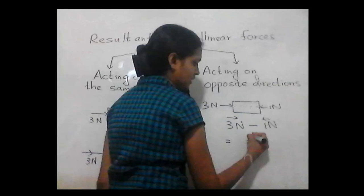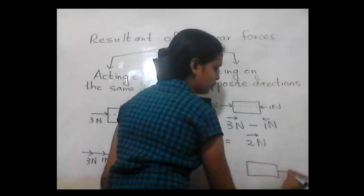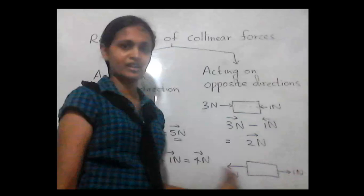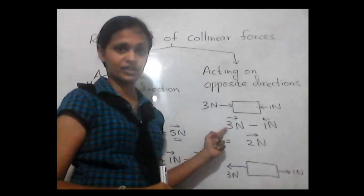There may also be an instance where a pull is applied in one direction and another pull in the opposite direction. In this case we get the same answer, but the direction will be the direction of the greater force — 2N towards that direction. To summarize: the resultant of collinear forces acting in the same direction equals the sum of the two forces, and the direction is the initial direction. The resultant of collinear forces acting in opposite directions equals the difference between the two forces, and the direction is that of the greater force.